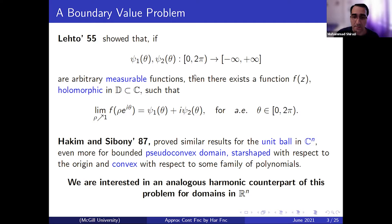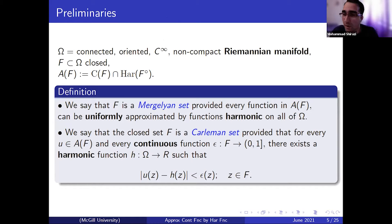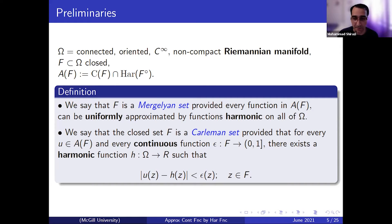Now let's go to the next slide and talk about the preliminaries, notations, and basic definitions you may need to follow my talk. We start with Ω being a non-compact Riemannian manifold, assumed connected. Let F be a closed subset of that. We use the notation A(F) to indicate the set of all continuous functions on F that are harmonic in the interior of F. The first definition in complex approximation theory: we call a closed set F a Mergelyan set if every function in A(F) can be uniformly approximated by functions harmonic on the entire space Ω.